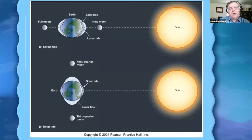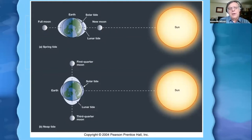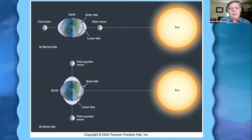The Earth goes around the Sun and the Moon goes around the Earth, so we don't always have the Sun, Moon, and Earth lined up in a straight line. When there's a full moon or new moon, the Earth, Moon, and Sun are roughly lined up. At that time, both tides line up — you have the solar tide, illustrated as the blue bulge, and then the much bigger Moon tide on top of that. That's why when we have a new moon or full moon, we get our greatest tides. Those are called spring tides — not because they happen in spring, but that's just the term we use.